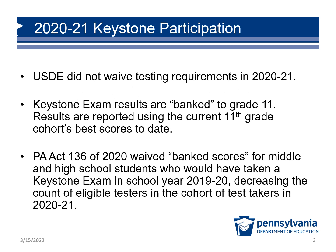An added layer of analysis is necessary when reviewing participation in the Keystone exams. Remember that exams were waived in school year 19-20. Keystone exam results are banked to grade 11. The displayed data is not representative of the number of kids who tested last year. Results are reported using the current 11th grade cohort's best score to date. Act 136 of 2020 waived banked scores for middle and high school students who would have taken a Keystone exam in school year 19-20, decreasing the count of eligible testers in the cohort of test takers in 2021.